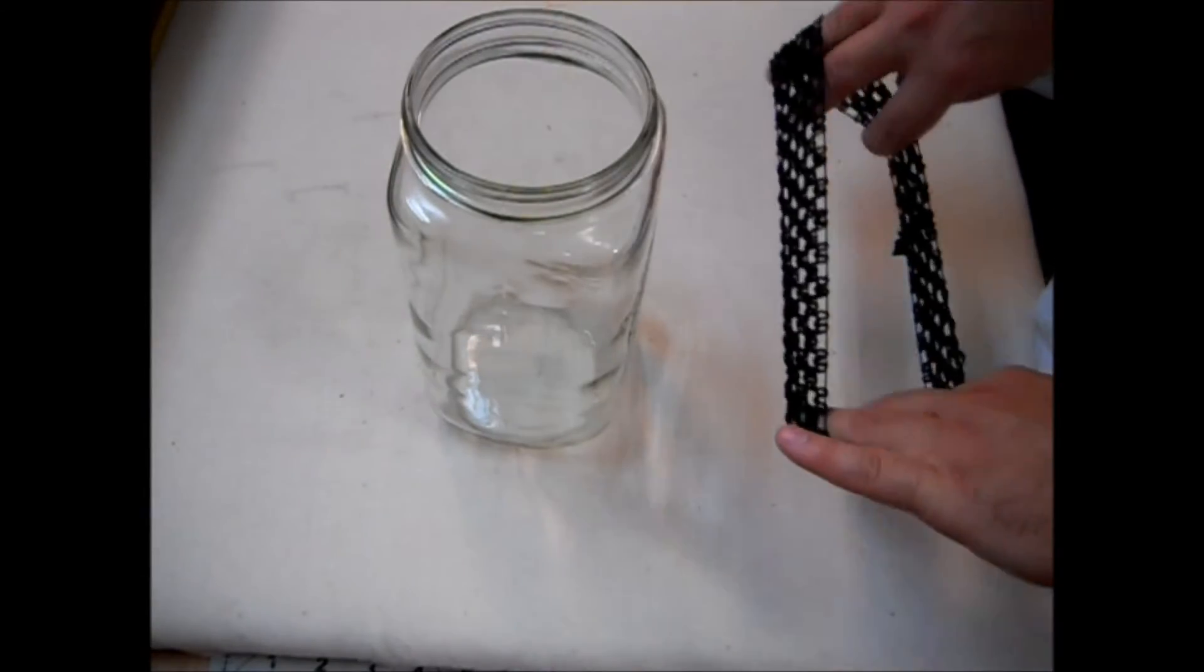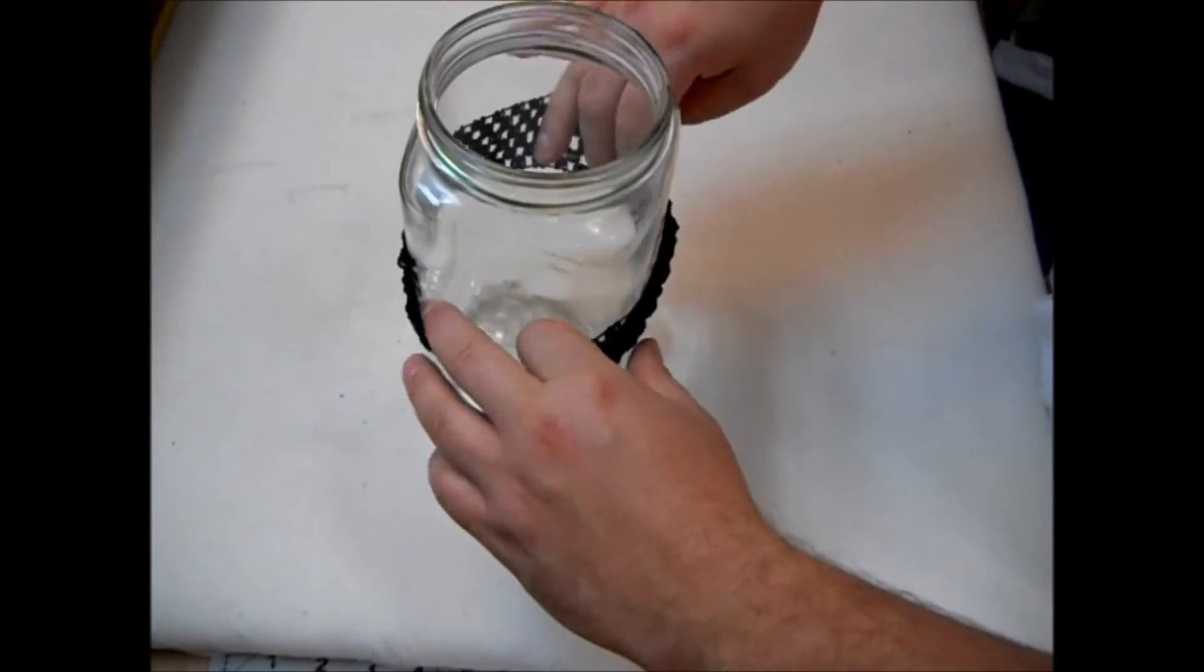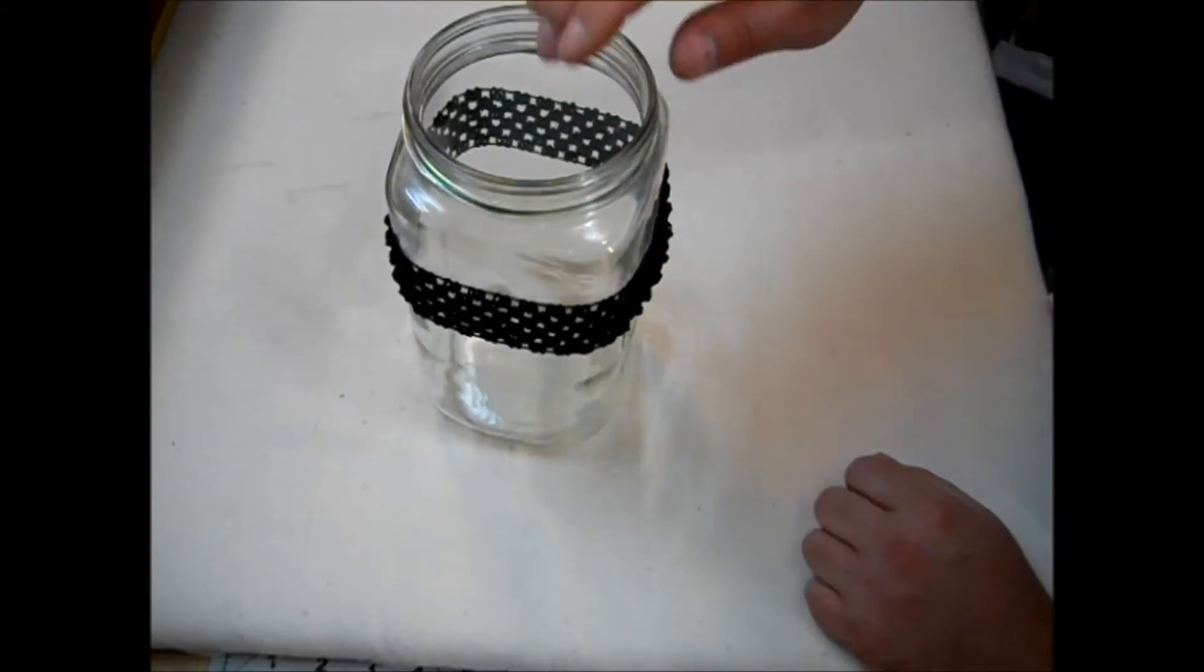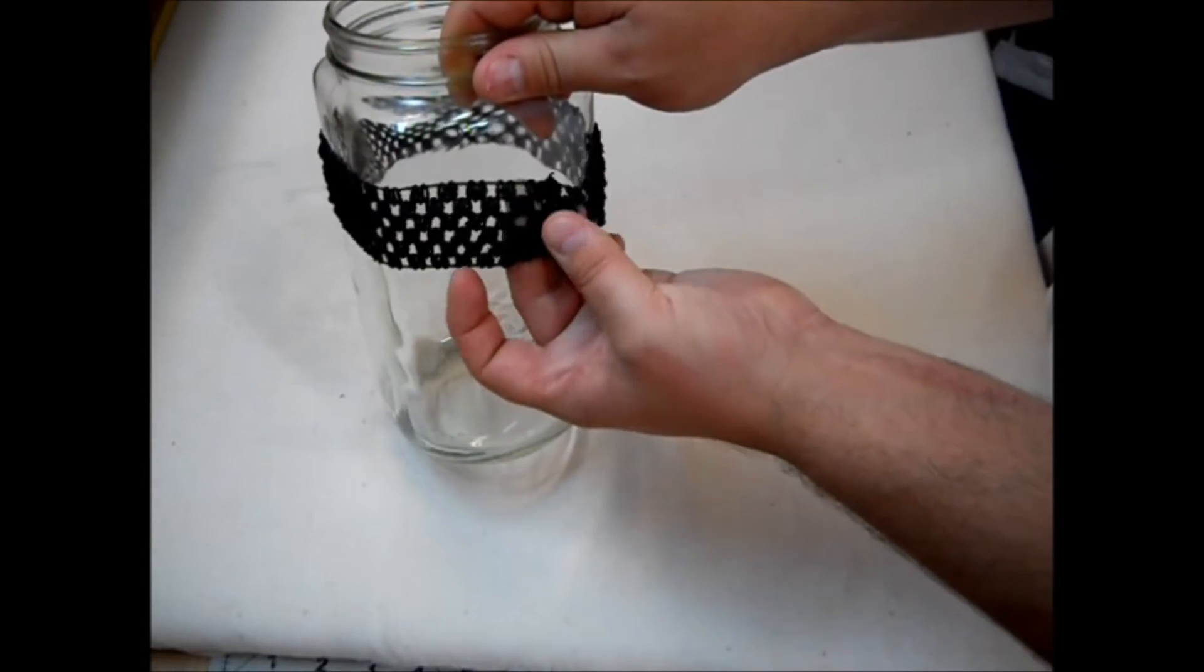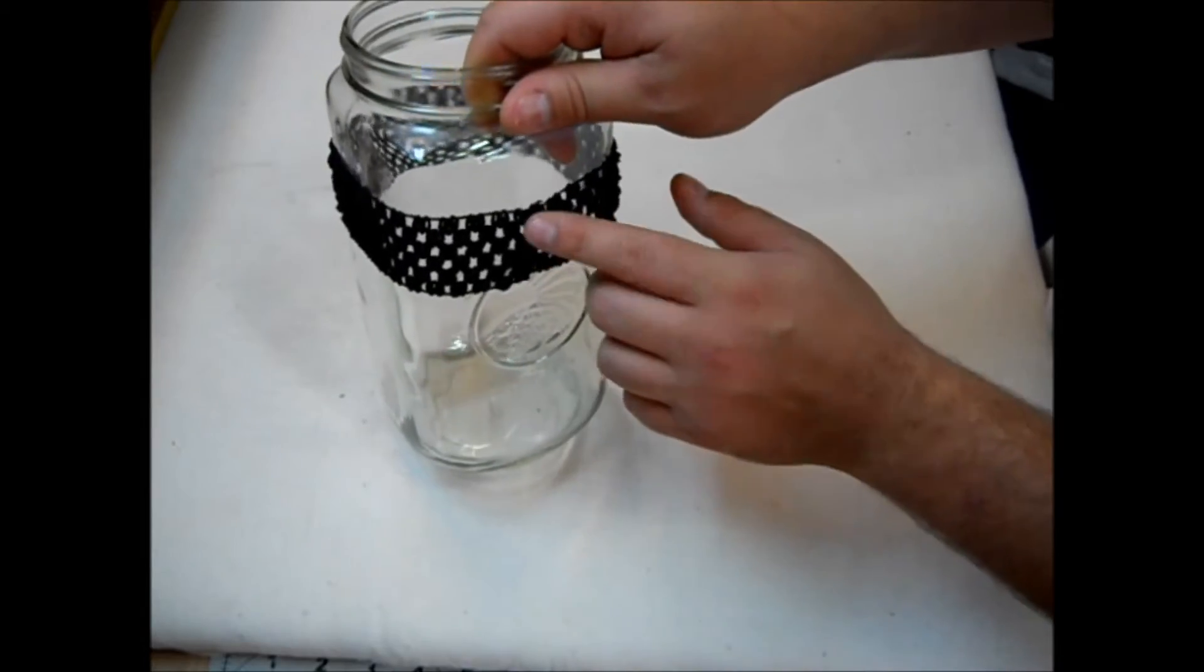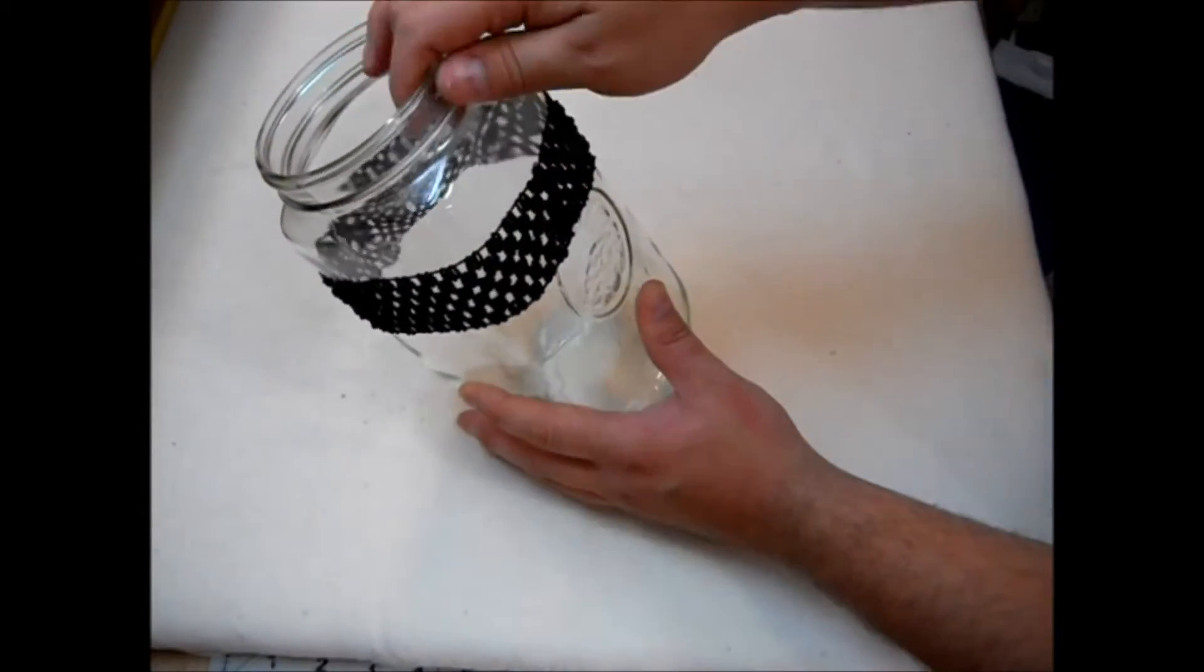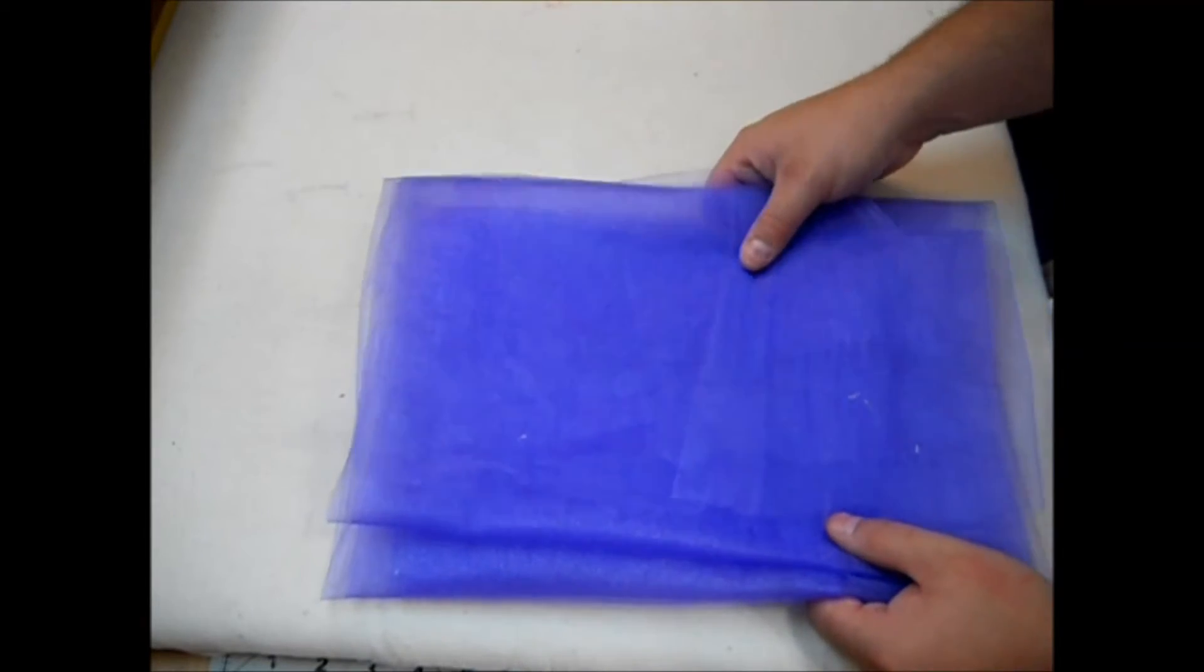The first thing we're going to do is put our headband around our jar. I like to put the seam of the headband on the bottom part where we're not going to put any tulle. Now, you just want to set this aside. Next, we're going to cut our tulle.